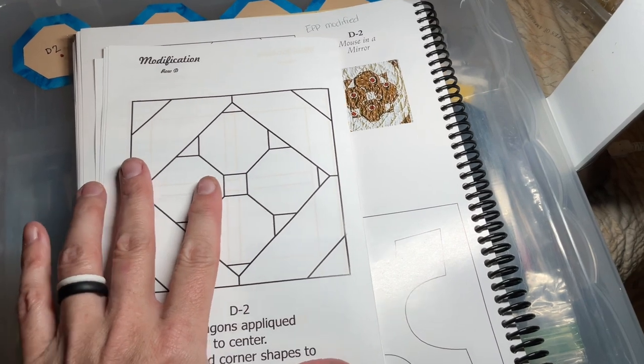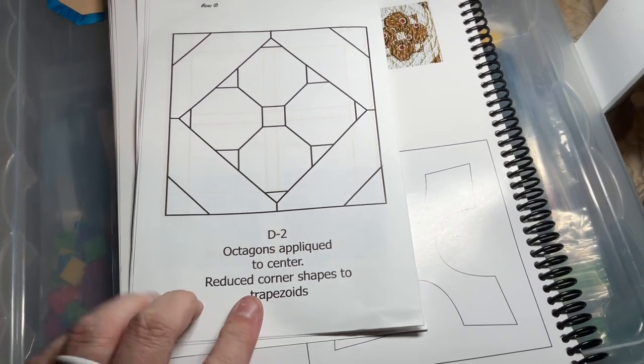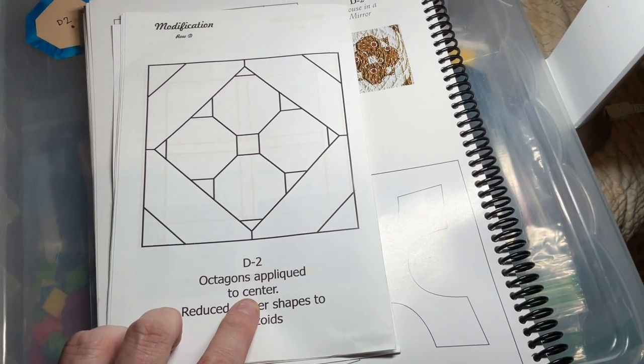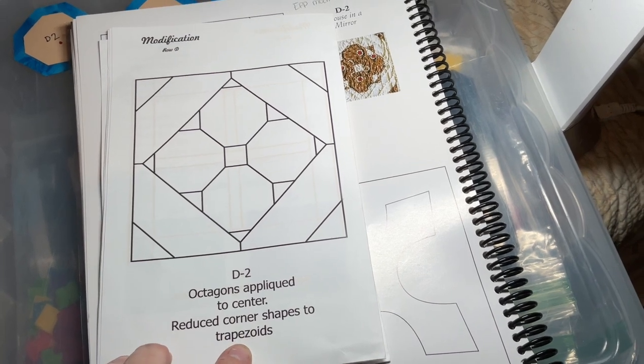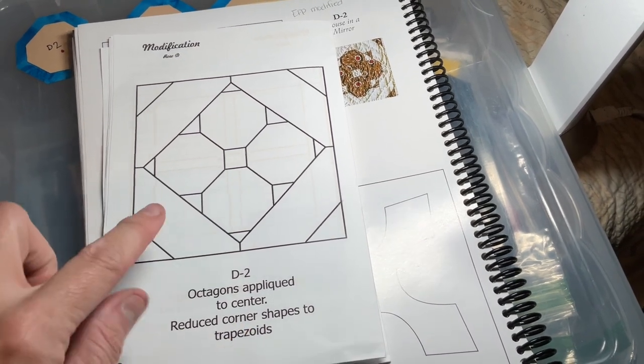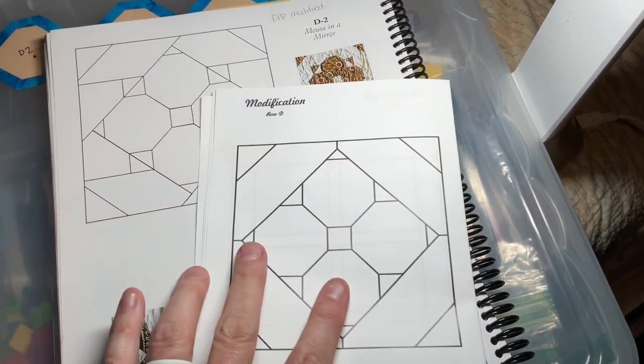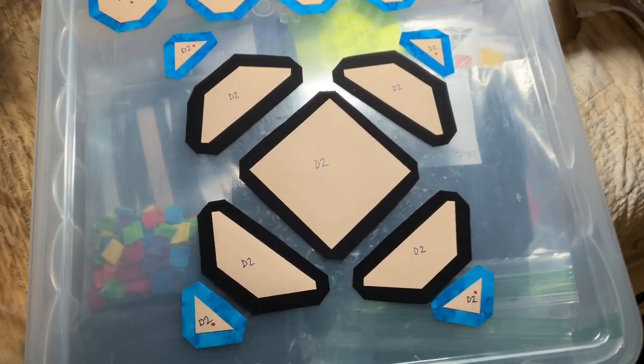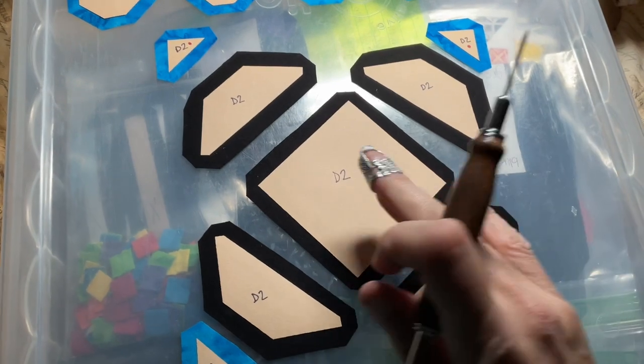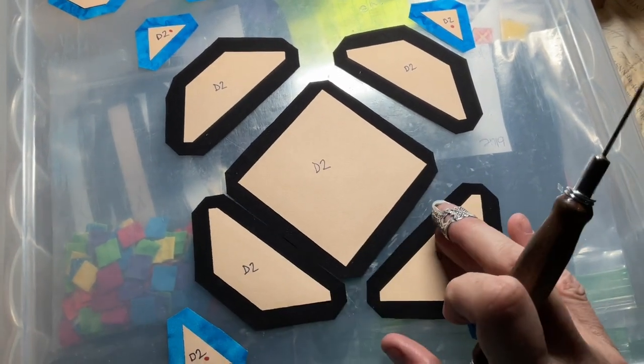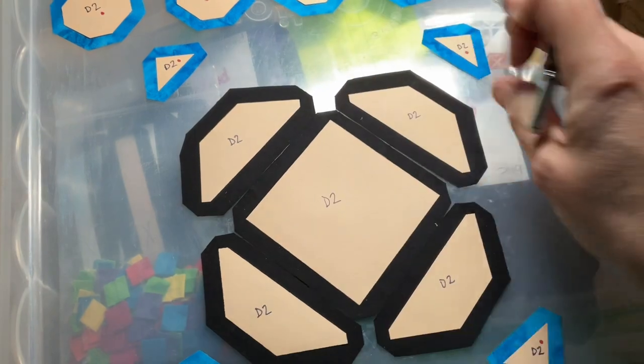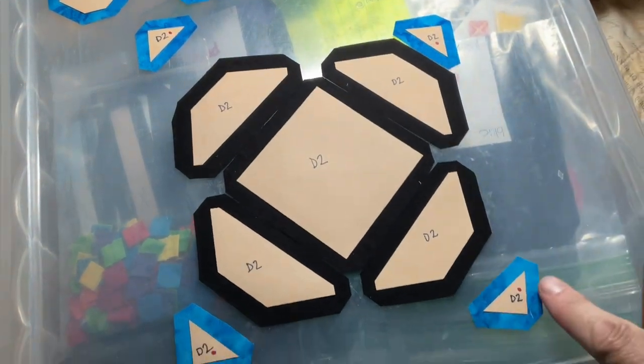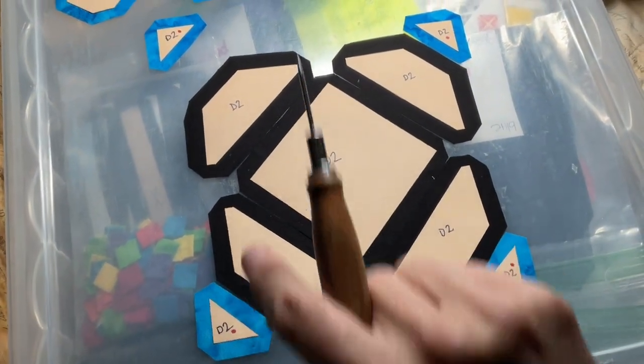So this is what we're working with. And you'll see a note on the bottom here. Octagons are appliqued to the center, and then they reduce the corner shapes to trapezoids. So here's my pieces. This is my main block right here. You've got this square that's surrounded by the trapezoids, and then the corners are focused fabric colored right here.